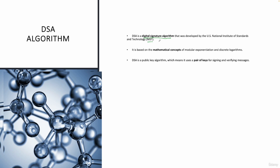DSA is based on the mathematical concepts of modular exponentiation and discrete logarithms. Very importantly, DSA is a public key algorithm — part of asymmetric cryptography with a public-private key pair. However, please don't confuse it with encryption: DSA is only used for digital signatures. No encryption or decryption of messages is performed. The keys are used only for signing and verifying messages.